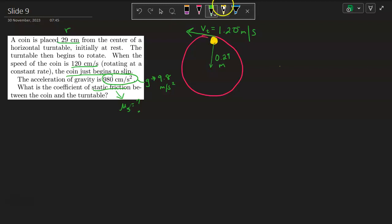Take away from this: the coin starts to slip when the centripetal force needed to keep the coin traveling in a circle equals the force of friction.